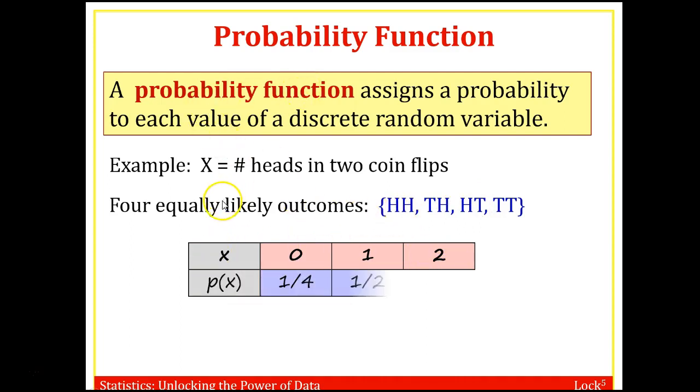And the probability function, p of x, again going back to your intermediate algebra notation, assigns a probability. So what's the likelihood or what's the probability of getting no heads? Only one way. When you get two tails, that's one of four. What's the probability of getting exactly one head? There's two different ways to get that. So two over four, which reduces to a half. Or what's the probability of getting exactly two heads when you flip two coins? Only one out of four chances. One out of four.